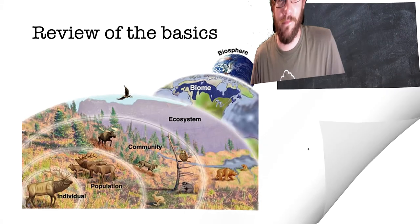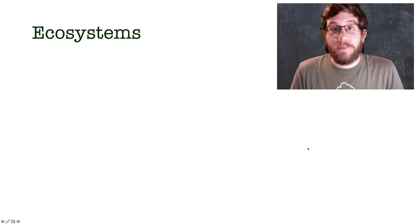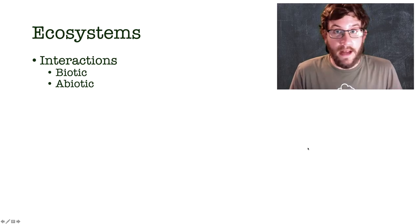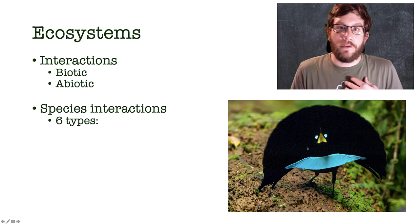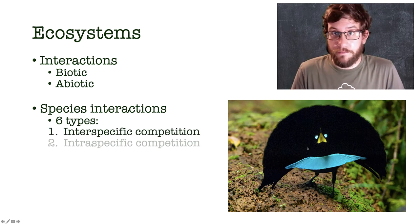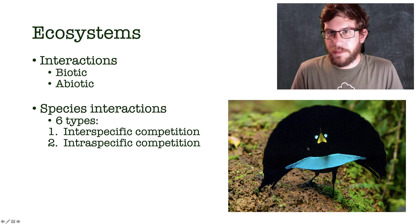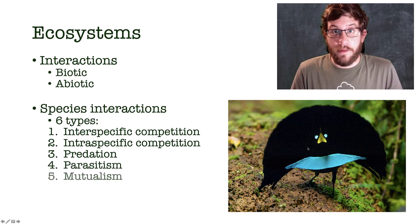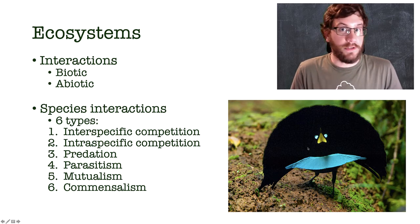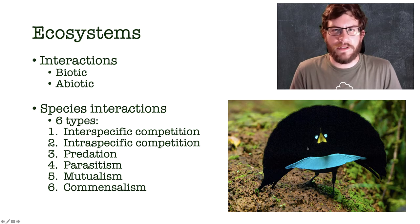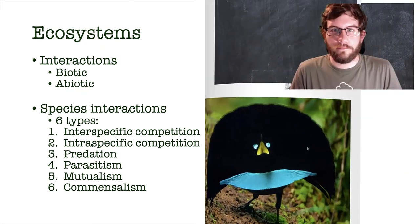Species interactions — we already know we have biotic and abiotic factors in an ecosystem, but you can also have interactions between those as well. There are six main types of species interactions: interspecific competition, intraspecific competition, predation, parasitism, mutualism, and commensalism. Understanding those is key to figuring out how an ecosystem is doing, its state, how it's recovering from a disturbance, and how it will fare going forward — it gives us a predictive tool.